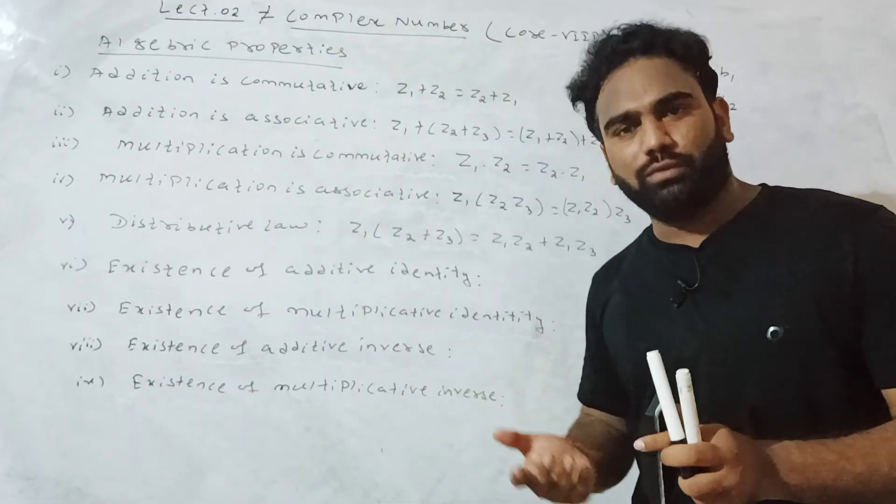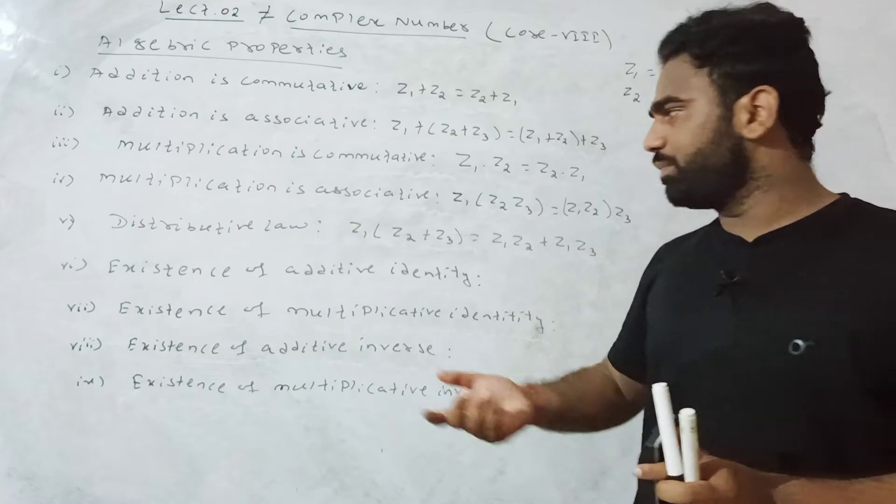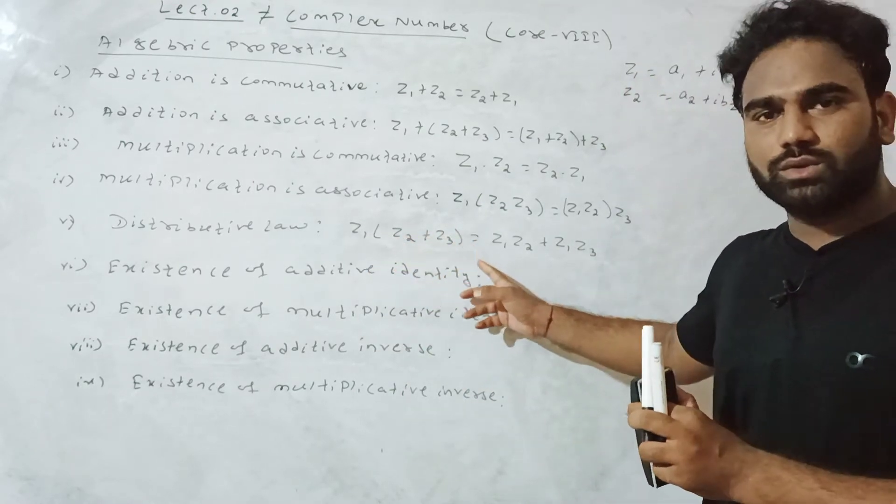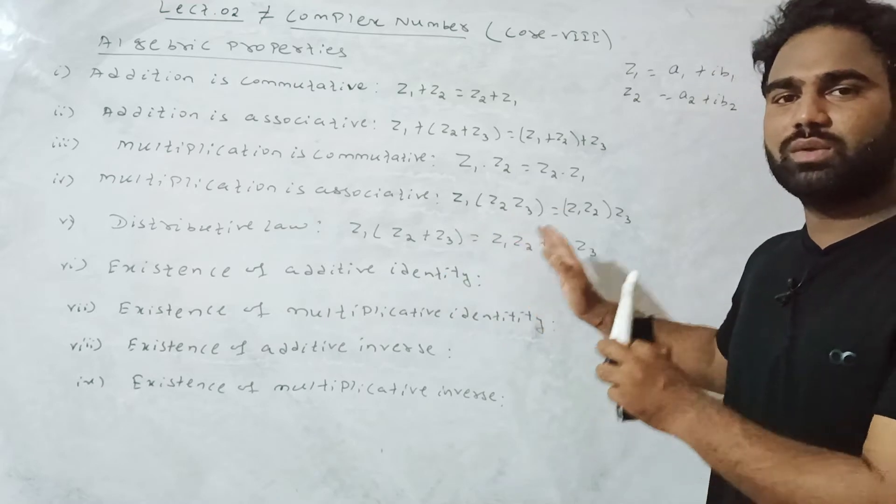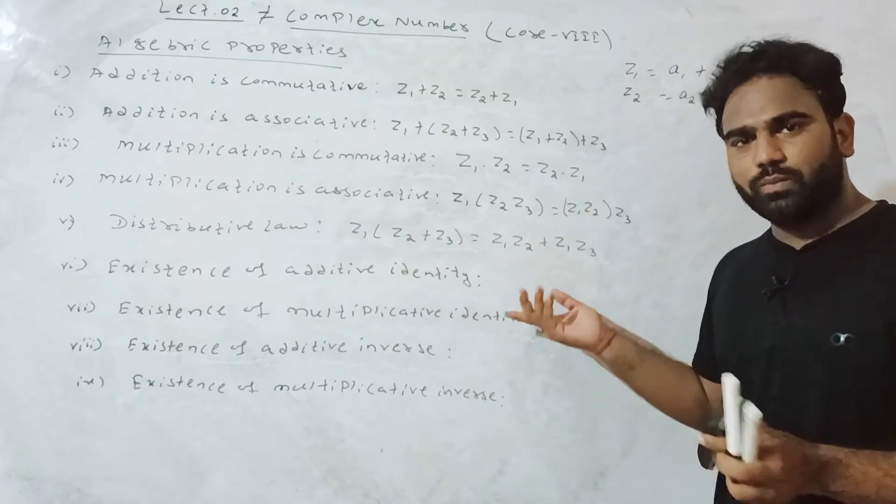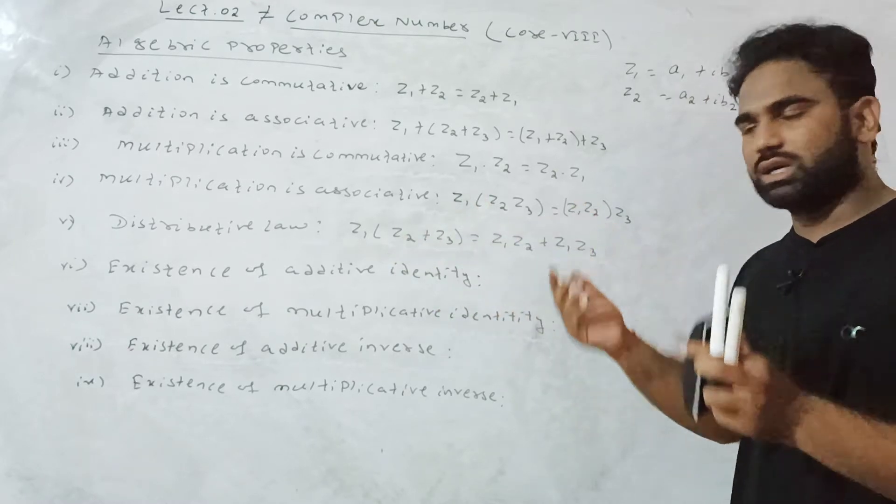It is also distributive. Z1 times the quantity Z2 plus Z3 equals Z1 Z2 plus Z1 Z3.